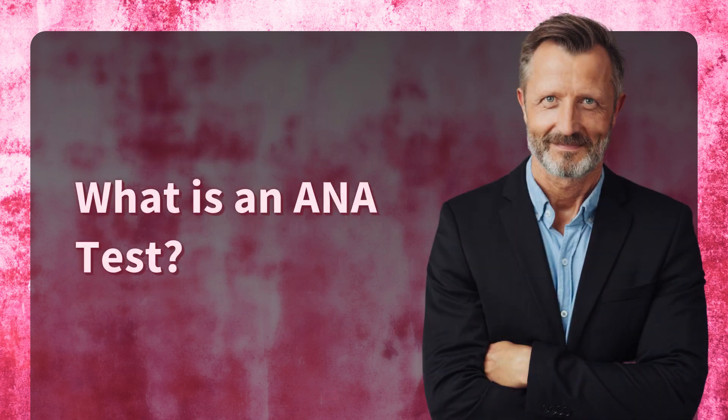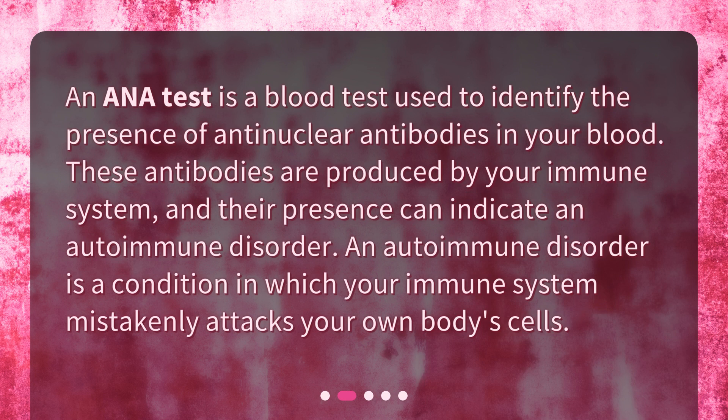What is an ANA test? An ANA test is a blood test used to identify the presence of anti-nuclear antibodies in your blood. These antibodies are produced by your immune system, and their presence can indicate an autoimmune disorder — a condition in which your immune system mistakenly attacks your own body's cells.